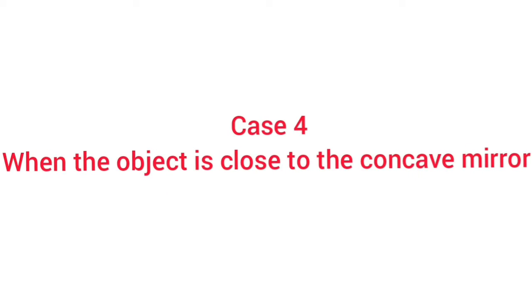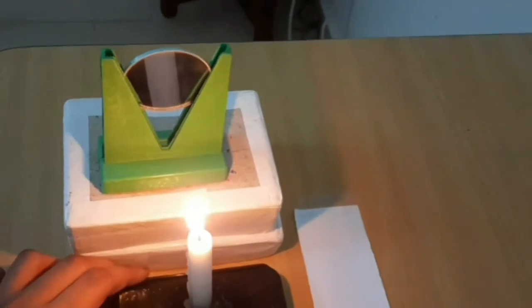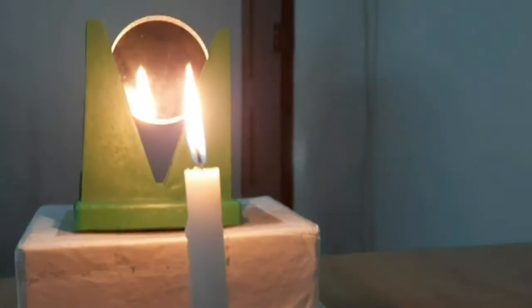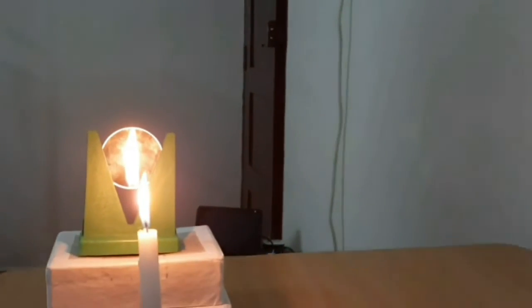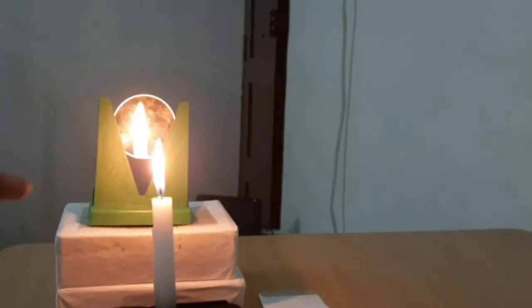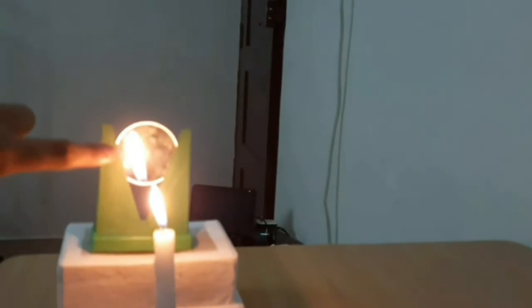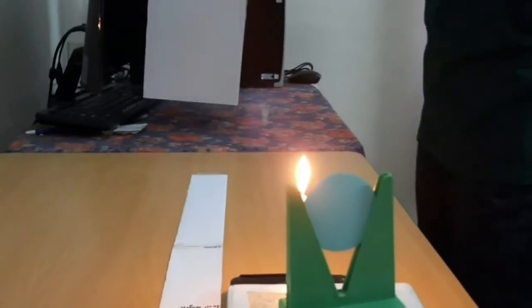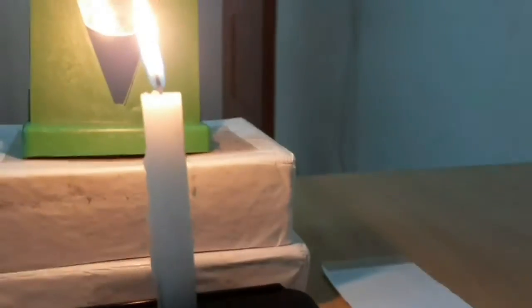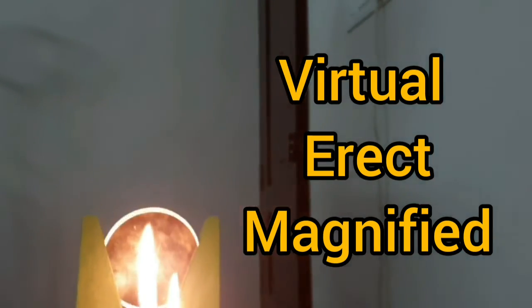In this case, place the object close to the concave mirror. Place the lighted candle close to the concave mirror, at a distance less than the focal length. Look in the concave mirror — we can see the enlarged image of the flame. No image is formed on the screen. The image formed here is virtual, erect, and larger than the object, that is magnified.